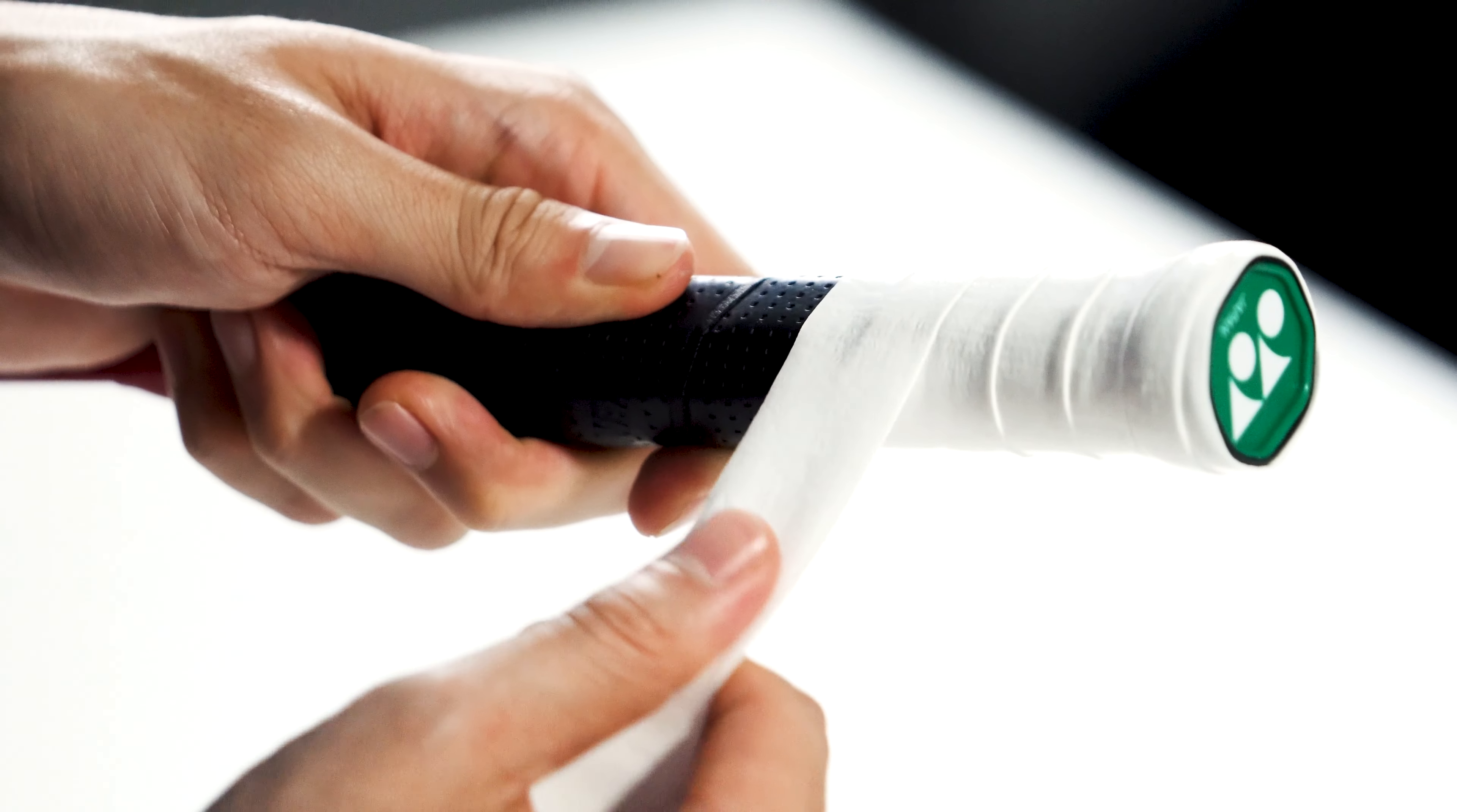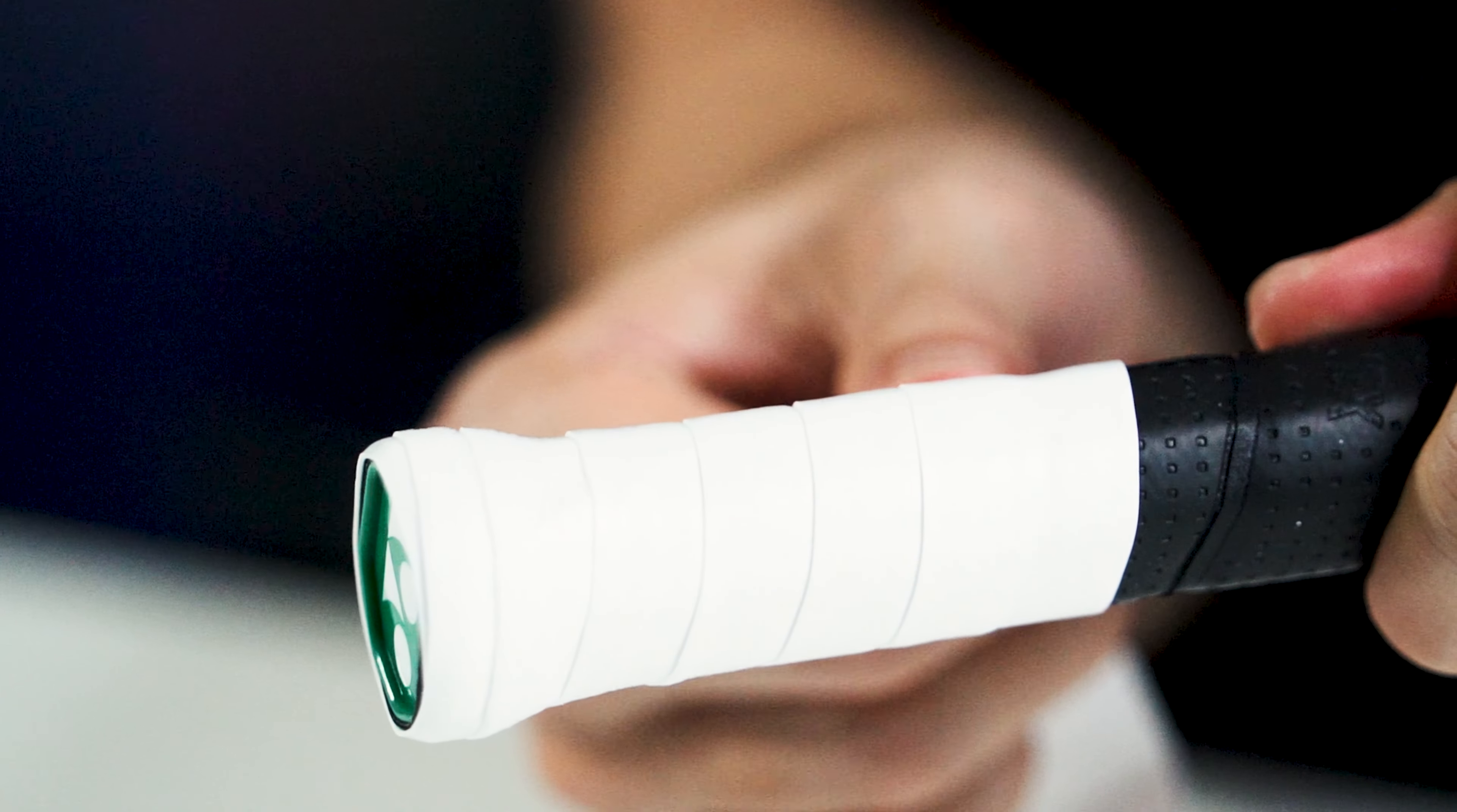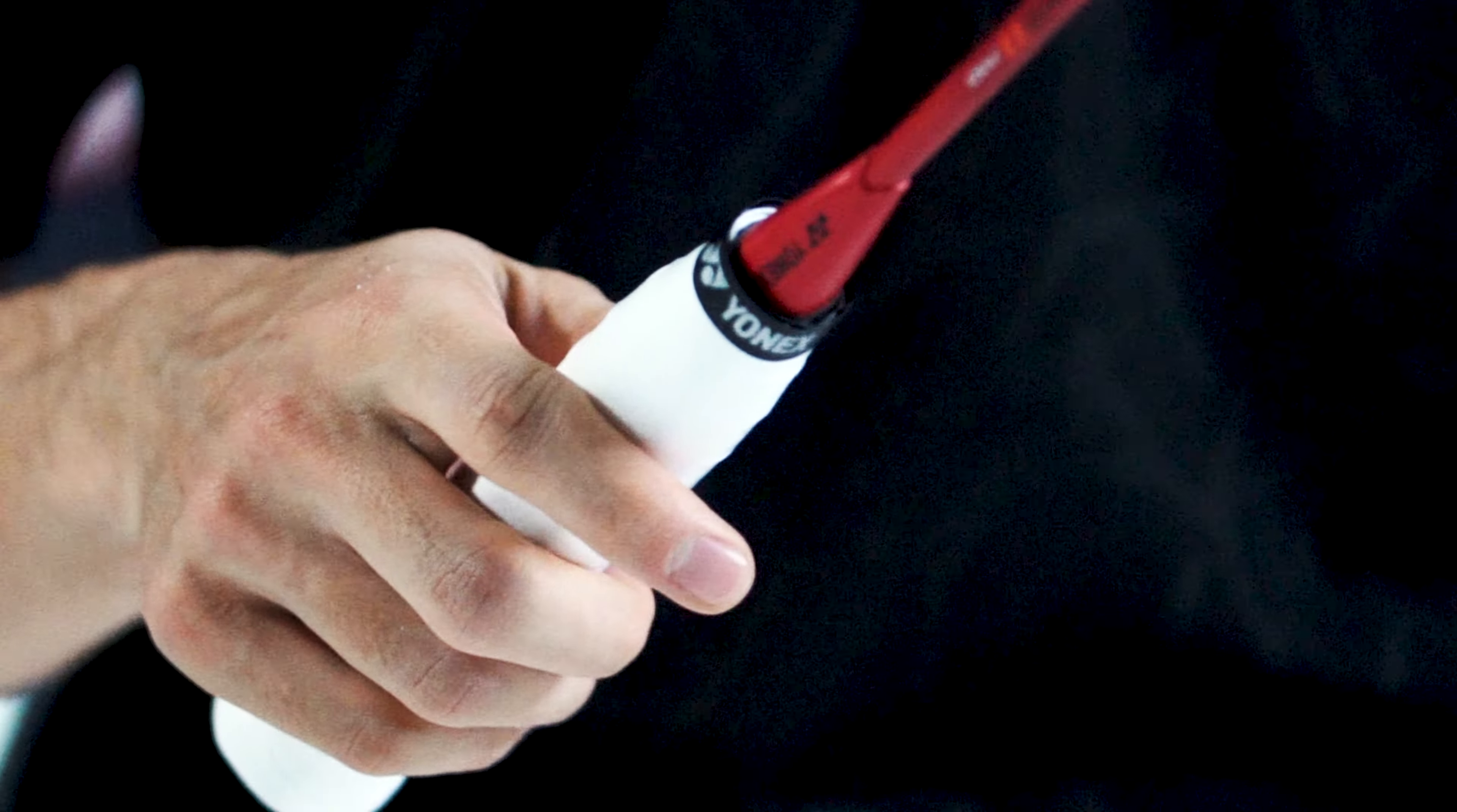Keep spinning the handle and using your hand to give it some tension. Keep going all the way through. The harder that you pull, obviously the thinner the grip's going to get because you're stretching it.